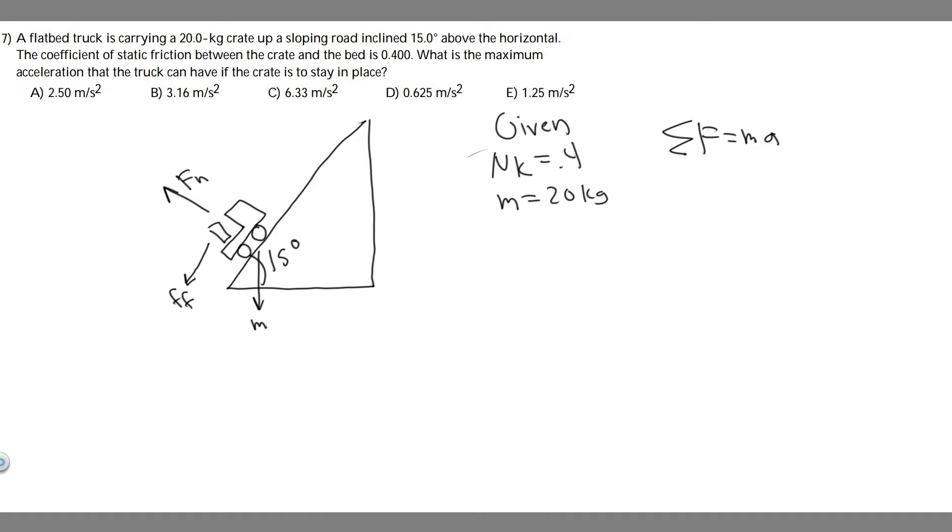In order to do this problem, what you want to do is draw a free body diagram first. What are the different forces we have acting? We have mg, the force of gravity, going straight down. We have the normal force, which is perpendicular to the surface it's on. And we also have the force of friction going in the opposite direction.